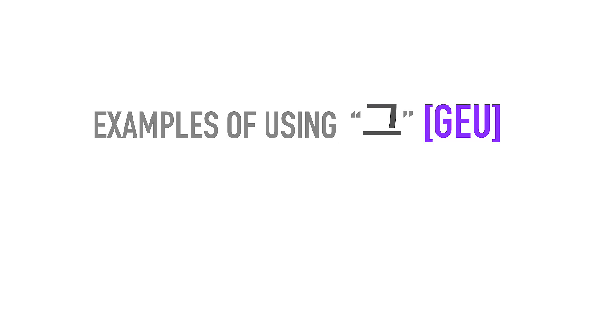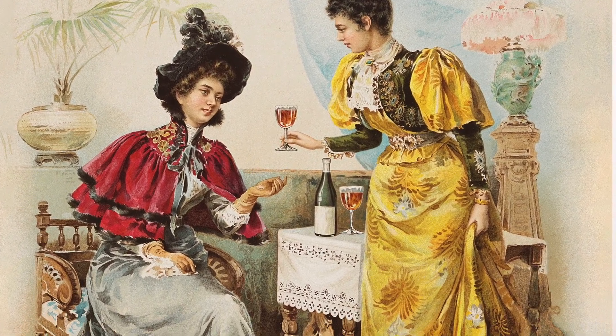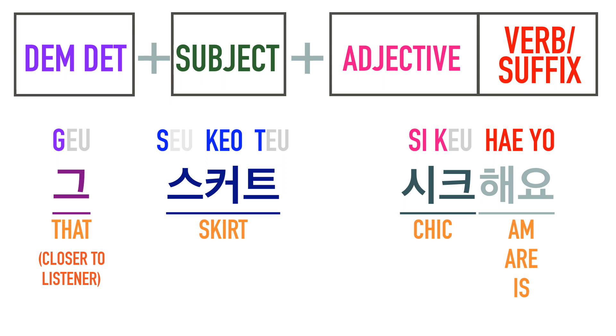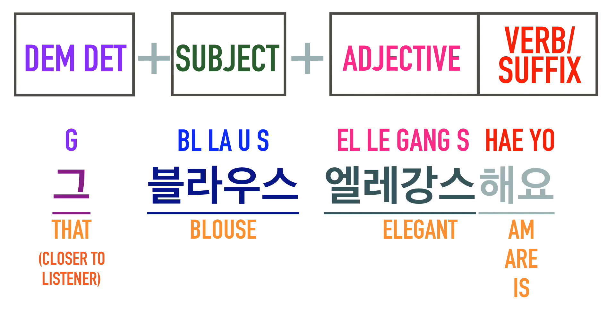Now let's look at some examples using 그. First, examples of 그 being used as 'that,' as in 'that thing close to you.' Imagine a situation where you are talking with someone and you point at something the other person is wearing. For example, if you want to say 'that skirt is chic,' you say: 그 스커트 시크예요. Or if the other person is wearing a blouse that is elegant, you say: 그 블라우스 엘레강스예요.